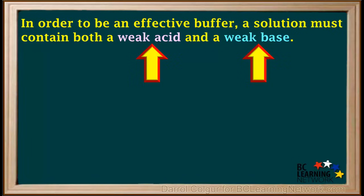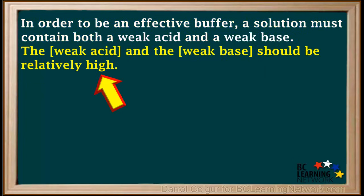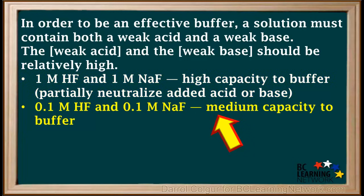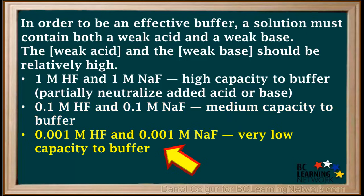In order to be an effective buffer solution, a solution must contain both a weak acid and a weak base, and the concentrations of each should be relatively high. For example, a solution with 1 molar HF and 1 molar NaF has a high capacity to buffer. A solution containing 0.1 molar HF and 0.1 molar NaF has a medium capacity. But a solution with 0.001 molar HF and 0.001 molar NaF has a very low capacity — very little weak acid to neutralize added bases, and very little weak base to neutralize added acids.